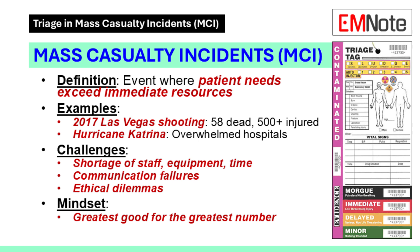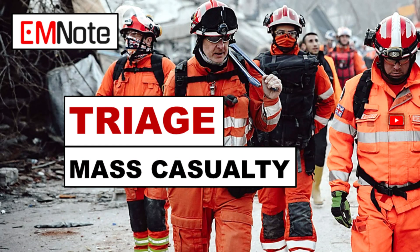Think of the 2017 Las Vegas shooting: 58 dead, over 500 injured — or Hurricane Katrina, where hospitals were flooded and staff couldn't keep up. These aren't just big emergencies; they're game changers. The challenges: you're short on staff, equipment, and time. Communication often fails — radios go down, cell networks crash. And then there's the ethical weight: who gets the last ventilator? In an MCI, we shift gears. Normal emergency medicine is about giving every patient 100%. In a disaster, it's about the greatest good for the greatest number. Studies from the American College of Emergency Physicians show that structured triage and resource management can double survival rates in these scenarios.